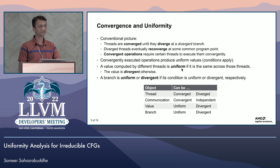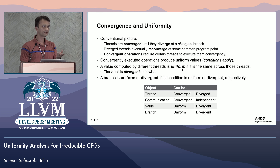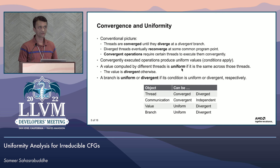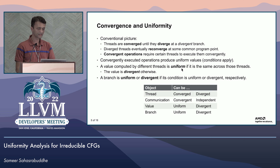Otherwise the value is divergent, meaning if it is different for different threads, then it is a divergent value. A branch is uniform or divergent if its condition is uniform or divergent. To summarize the terms: threads can be converged or diverged; communication is convergent or independent; values are uniform or divergent; and branches are uniform or divergent.